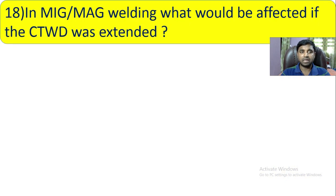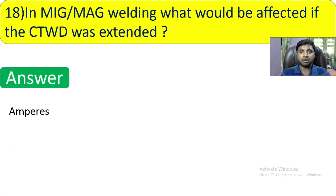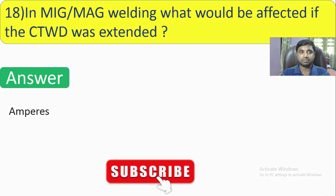Question number 18: In MIG-MAG welding, what would be affected if the CTWD (contact tip to workpiece distance) was extended? If the contact tip to workpiece distance is extended, then the parameter that will be affected is the amperage.